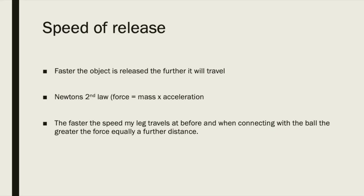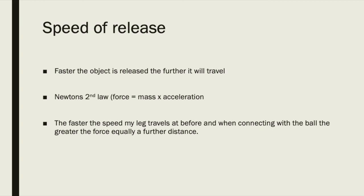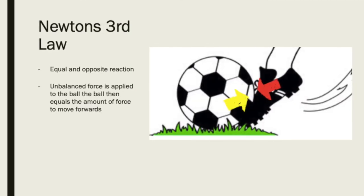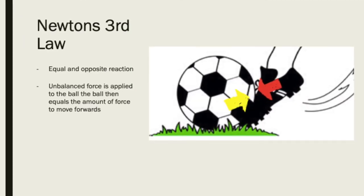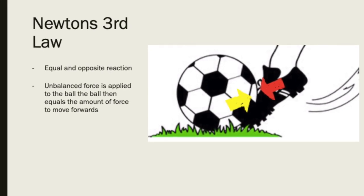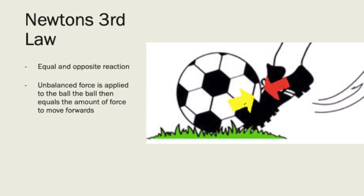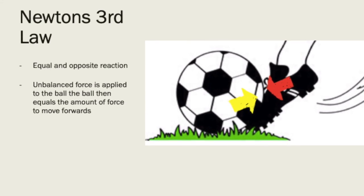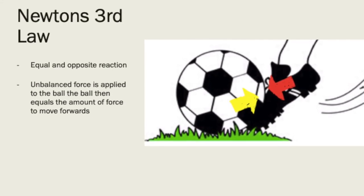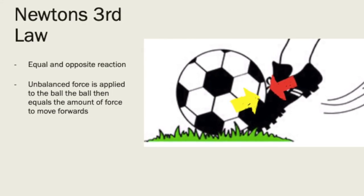The speed of release of the ball is affected by the velocity created before striking. The speed of the soccer ball when leaving the ground impacts on distance. Speed of contact and angle of release relate to Newton's third law, which states that every action has an equal and opposite reaction. In a soccer free kick, my foot exerts a force onto the ball when striking, and the ball exerts the same amount of force back with an equal but opposite force.